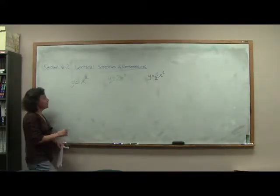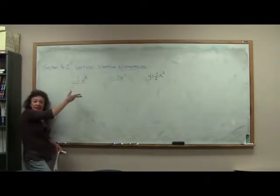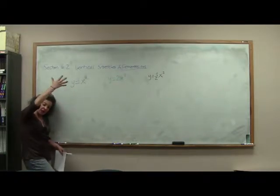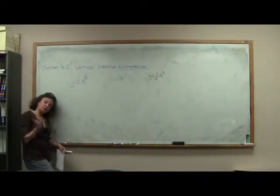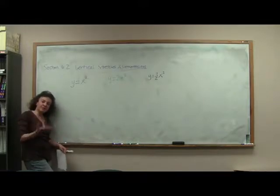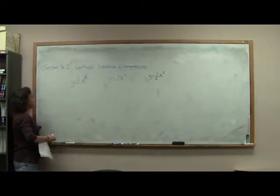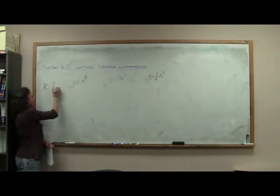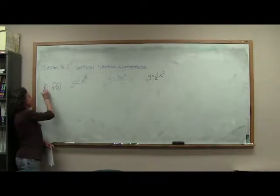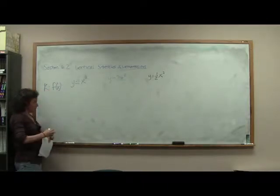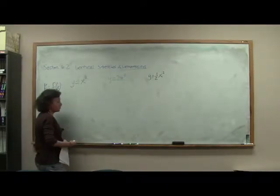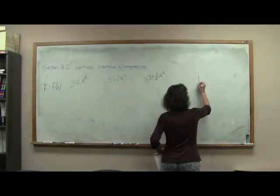Because our general question is, we've put negatives in, we've added and subtracted within and without. So now we're asking what happens if we multiply. Notice, in each of these situations, we're looking at k times f of x. So, let's graph these guys and let's make some comparisons.